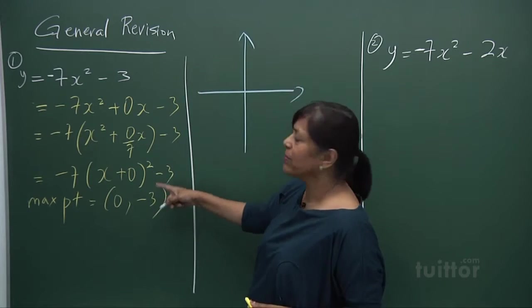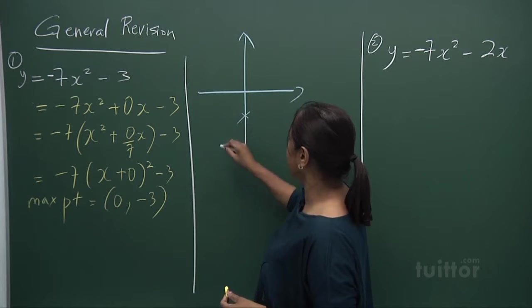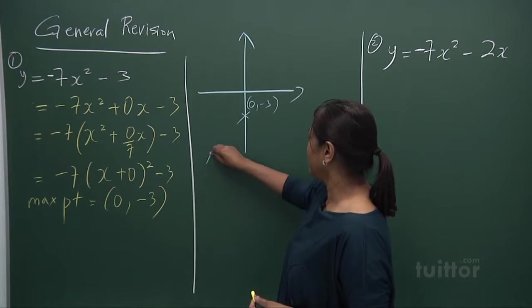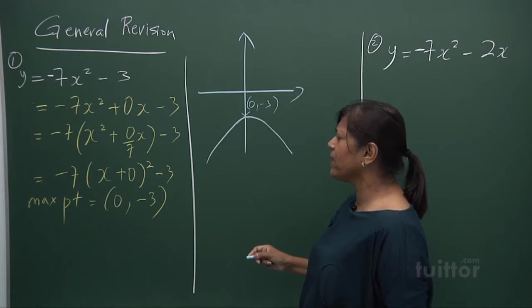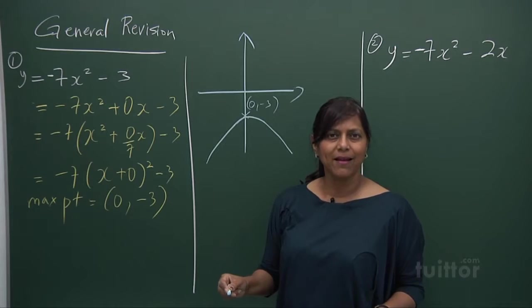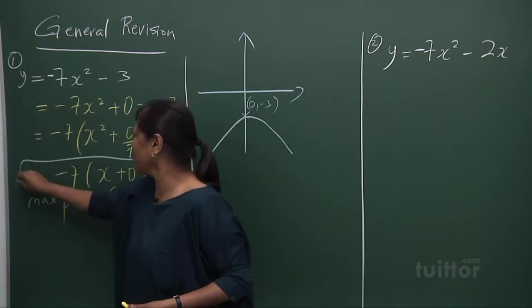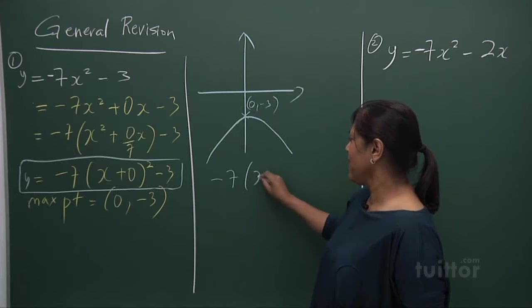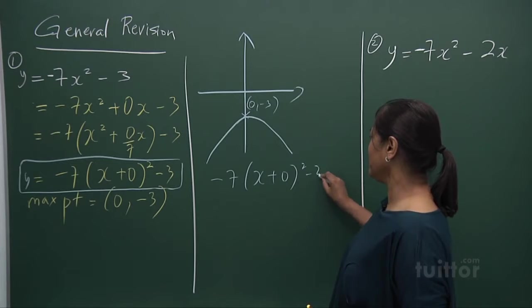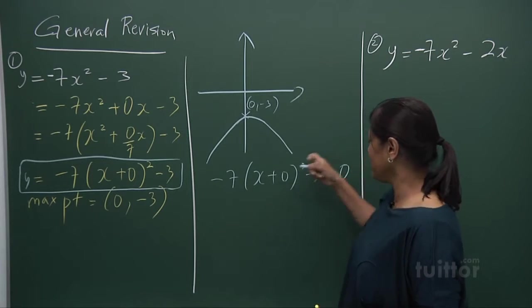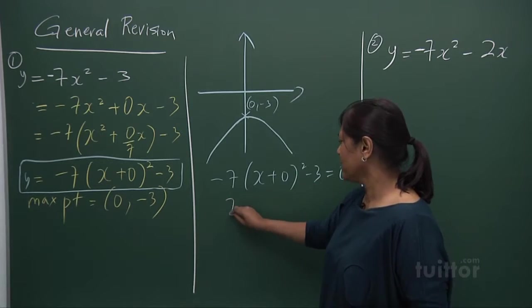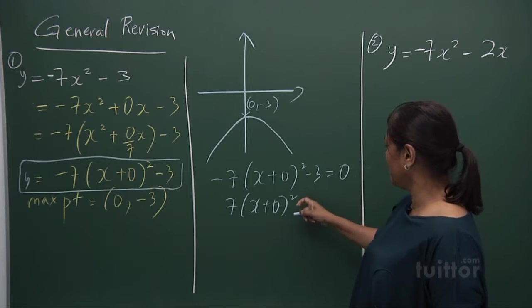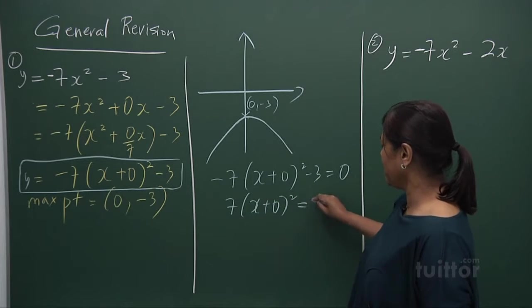When x is 0, y is -3. The curve goes this way - maximum point. You can see very clearly there is no turning point. I want to show you more about the turning point here. Let's look at the roots to be convinced by it. We have -7(x + 0)² - 3 = 0 at turning point. Bring this over, you get -3. Multiply by minus and a minus and bring -3 over, this becomes +3.